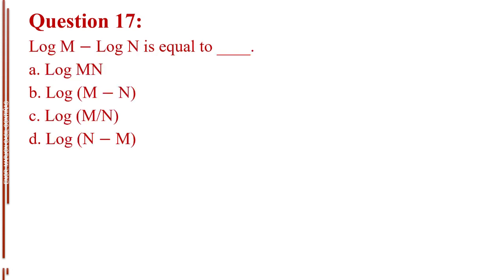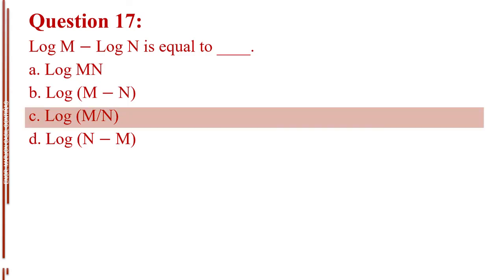Question number seventeen. Log M minus log N is equal to blank. Letter A, log MN. Letter B, log M minus N. Letter C, log M over N. Letter D, log N minus M. The answer is Letter C, log M over N.